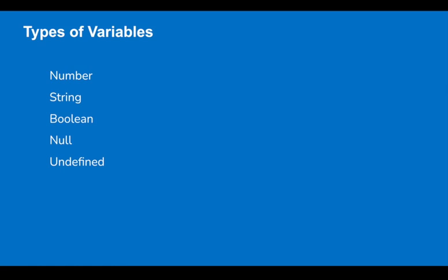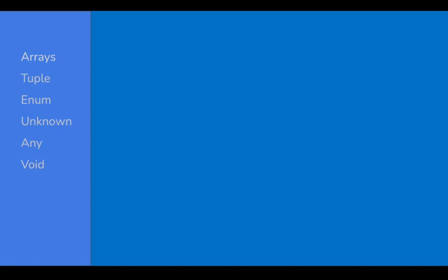Today I am going to go very basic step by step and we are going to learn arrays, tuple, enum, unknown, any and void type of variables. This is going to be very easy and very interesting. So let's get started and let us start with arrays.